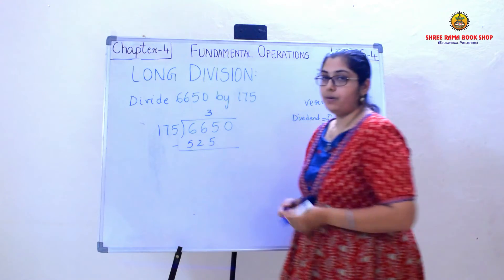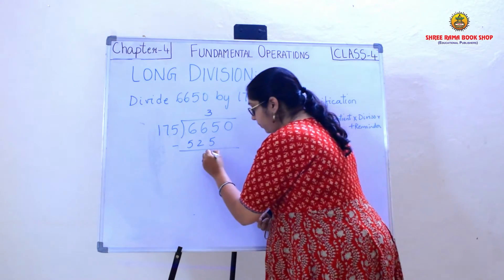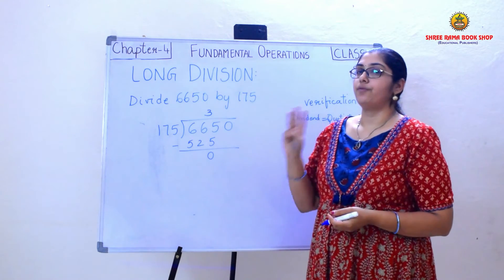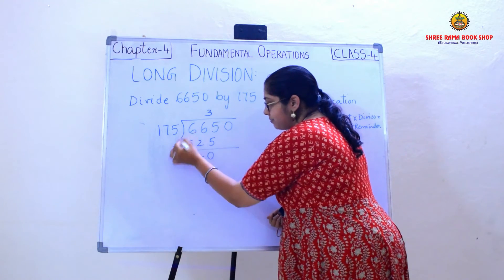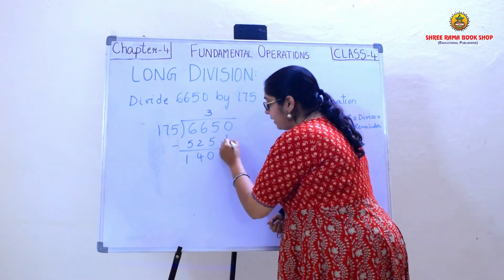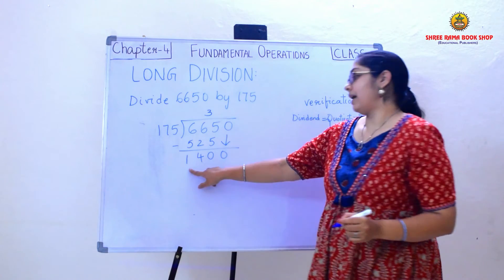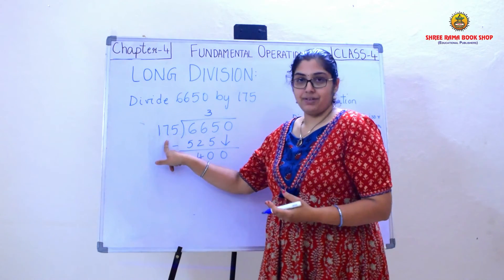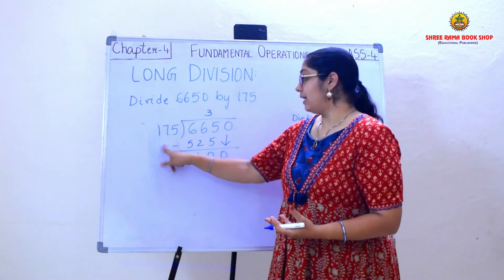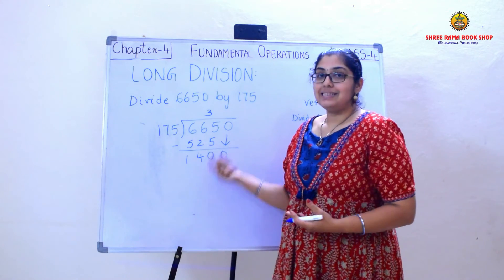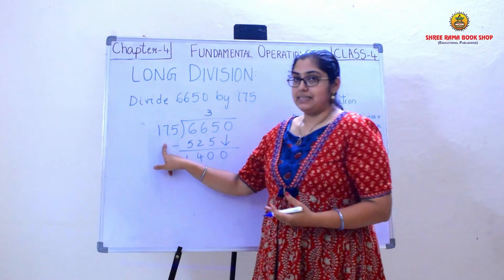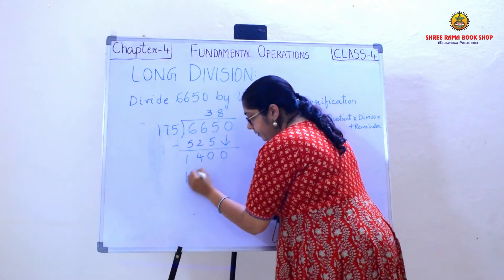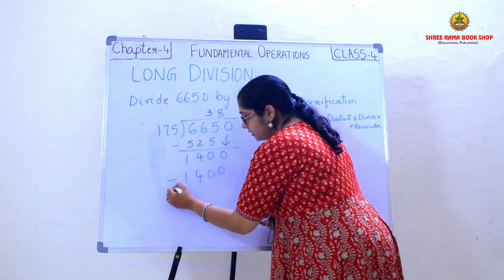I will be subtracting now. 5 minus 5 is 0, 6 minus 2 is 4, and 6 minus 5 is 1. So I get remainder 140 and bring down the 0, giving the number 1400. Reading the multiplication table of 175, for 8 times I have 1400. So 175 times 8 is 1400.